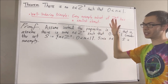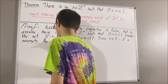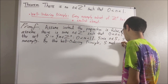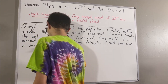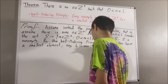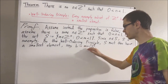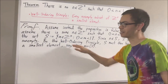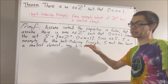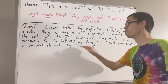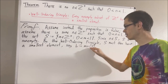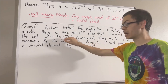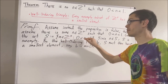Let's call that smallest element b. And remember, what this means is that b is less than or equal to every element of S. Since b is the smallest element of S, of course b is an element of S. So, if we take m to be b, we have that b is a positive integer and 0 is less than b is less than 1.